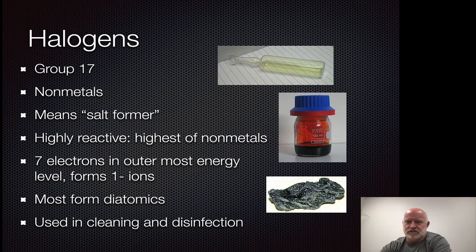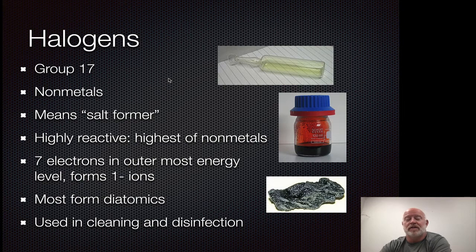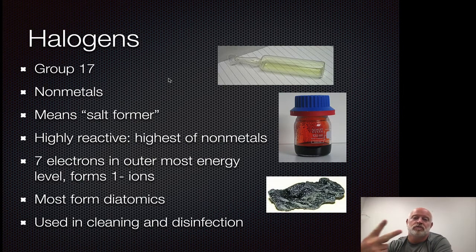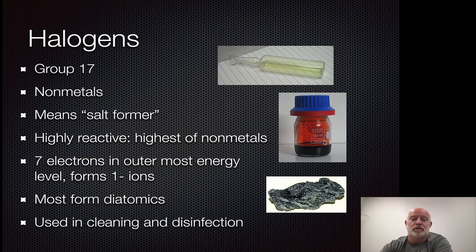An interesting thing with the halogens: we have chlorine gas, bromine as a liquid, and iodine as a solid. So they're all non-metals, but they're not all gases at room temperature. In fact, we only have two liquids on our periodic table at room temperature, and one is bromine and the other is mercury. Besides that, everything else is either a solid or gas on the periodic table.